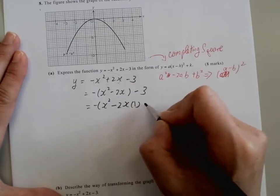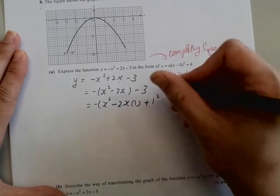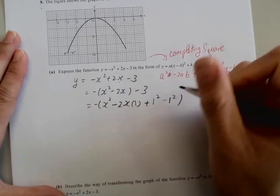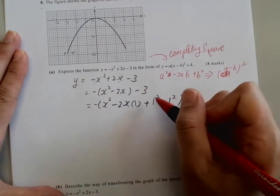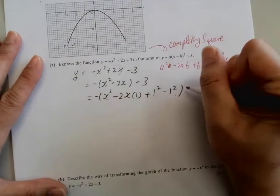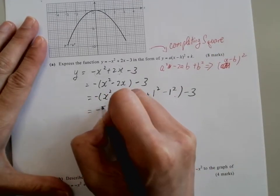1 squared balances the negative 2 times 1 out, and then we have b squared. However, b squared comes from middle of nowhere, so we need to minus it to balance it. This one balances the two, and these two balance it out.